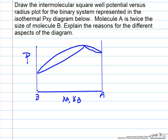In this problem we're giving pressure versus mole fraction for a binary system. The plot indicates that we have an azeotrope and it says molecule A is twice the size of B.